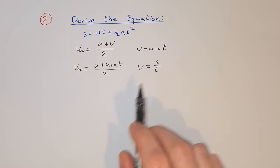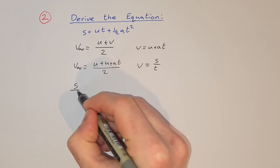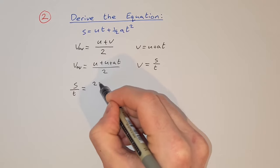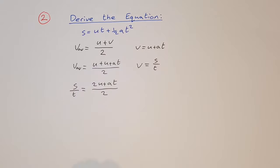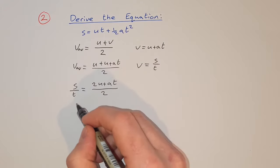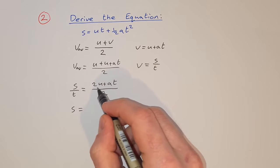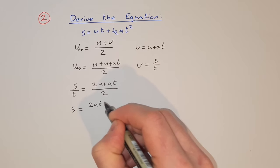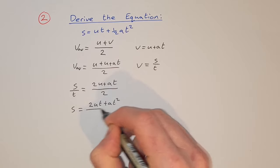We can substitute that in to say s/t = (2u + at)/2. So if we want to get s on its own, we multiply across by t, giving s = t × (2u + at)/2, which expands to (2ut + at²)/2.